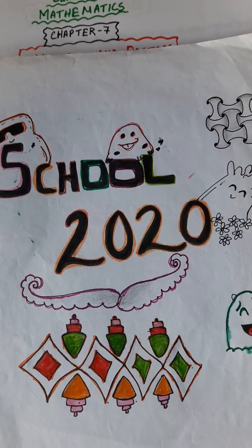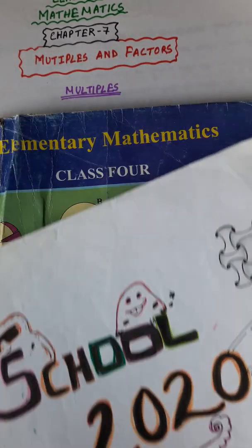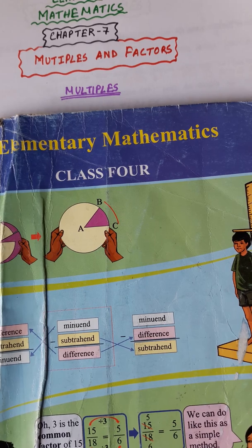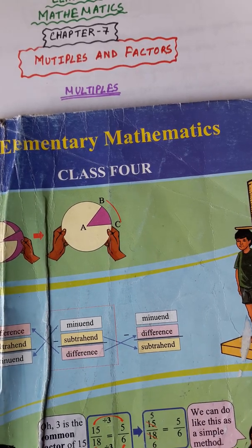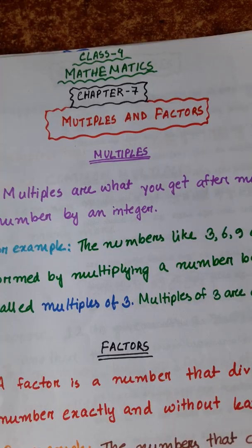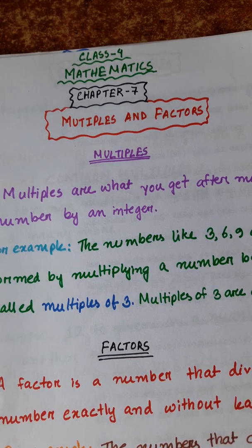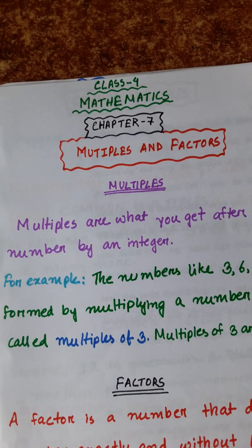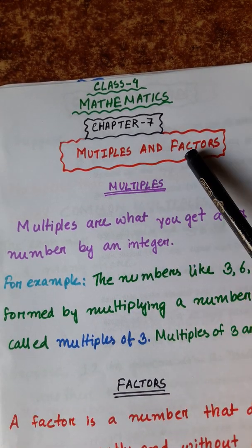Welcome to School 2020. Today we are going to go to elementary mathematics, class 4, chapter 7. Chapter 7 is going to start — before we begin, we will cover a basic lesson. The name of this chapter is Multiples and Factors.